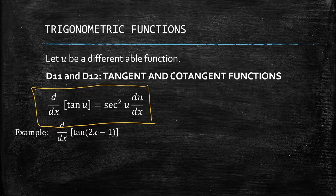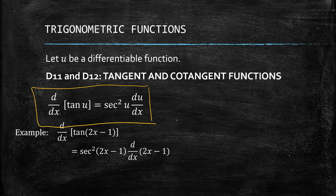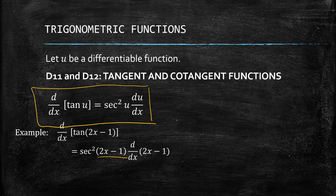Let's have an example: the derivative of tangent of (2x minus 1). We start with secant squared of (2x minus 1) — we simply copy whatever is inside the parentheses, which is our u. Then we take the derivative of u, which is (2x minus 1).